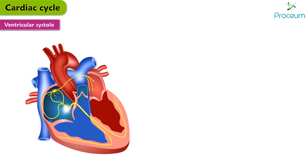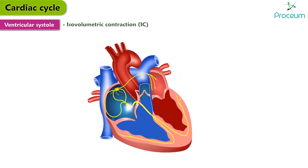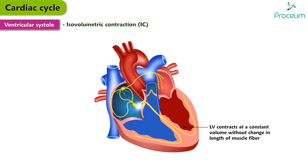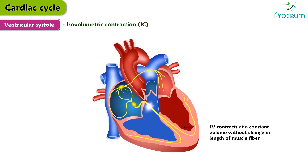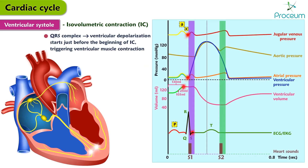Ventricular systole. During ventricular systole, which lasts about 0.3 seconds, the ventricles are contracting while the atria are relaxed in atrial diastole. It is divided into three phases. Isovolumetric contraction: the left ventricle contracts at a constant volume without changing the length of the muscle fiber, since both the mitral and aortic valves are closed. During this phase, the intraventricular tension is greatly increased within the cardiac muscle fibers. On the EKG, the QRS complex representing ventricular depolarization starts just before the beginning of isovolumetric contraction, triggering ventricular muscle contraction.